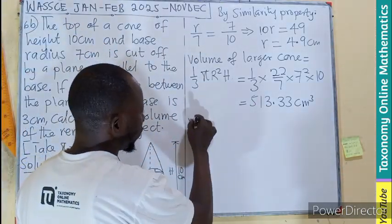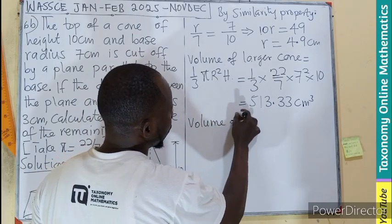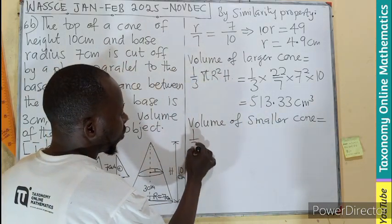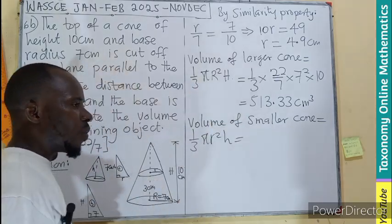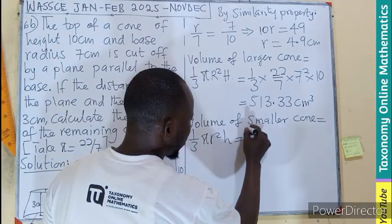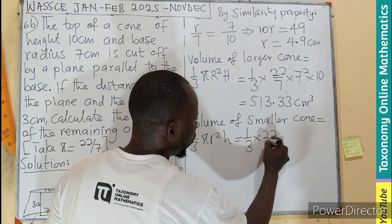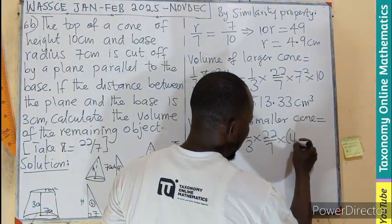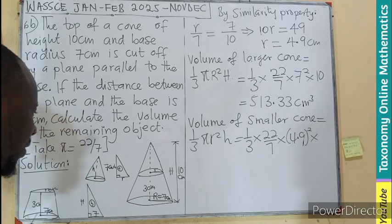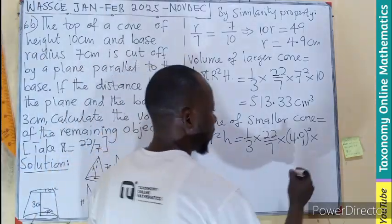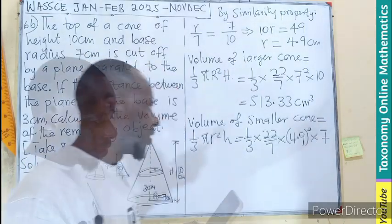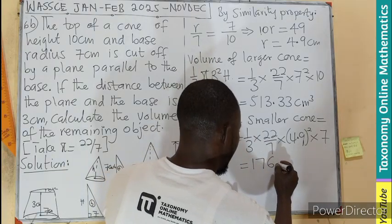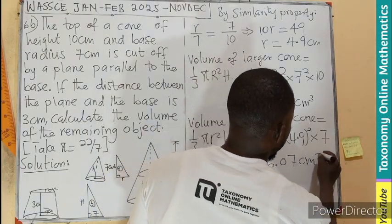So next thing, to find the volume of smaller cone. And that will also be equals to 1/3 π r squared h. We can use the smaller ones here now. So by substitution, 1/3 times 22/7. What is the radius which we found to be 4.9? So 4.9 r squared times the height. The height which has already been giving us 7. Remember, this 7 will cancel that. So we should be having the volume to be 176.07 centimeter cube.